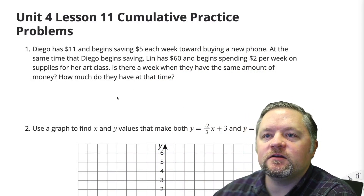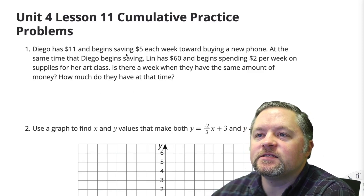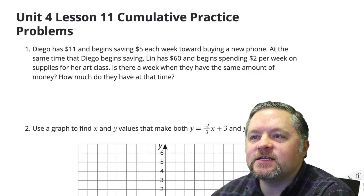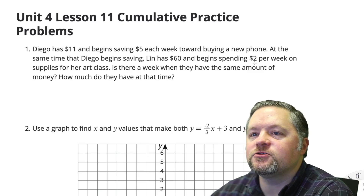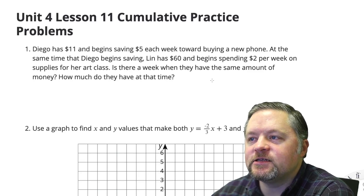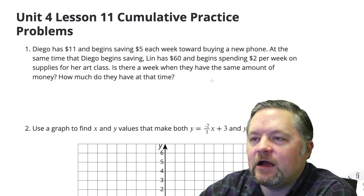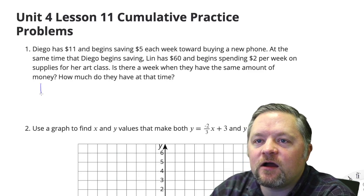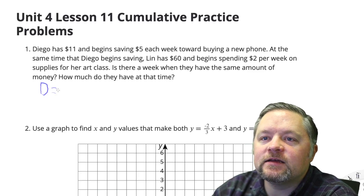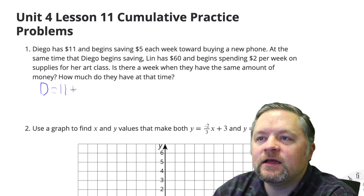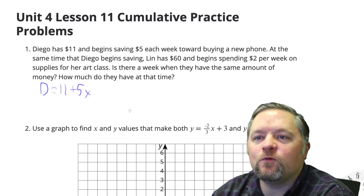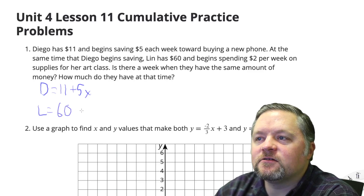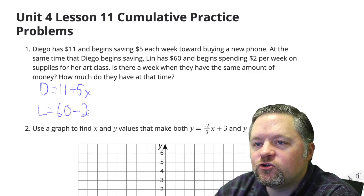Our first question: Diego has $11 and begins saving $5 each week towards buying a new phone. At the same time that Diego begins saving, Lynn has $60 and begins spending $2 per week on supplies for her art class. Is there a week when they have the same amount of money? How much money do they have at that time?